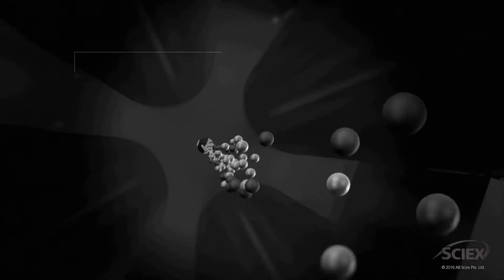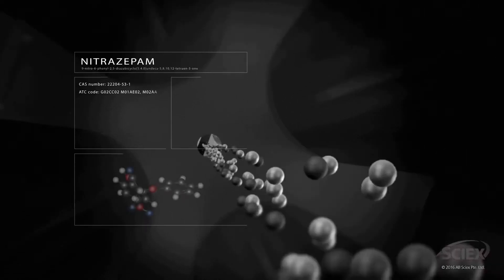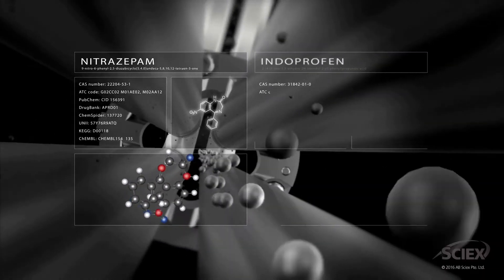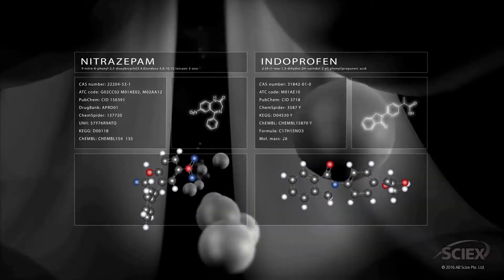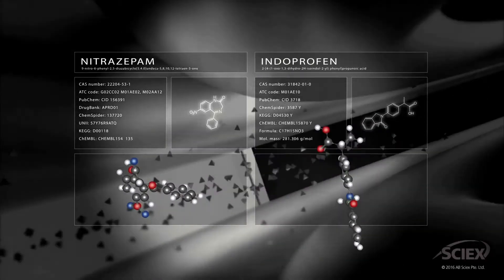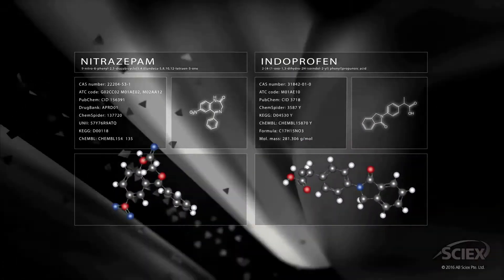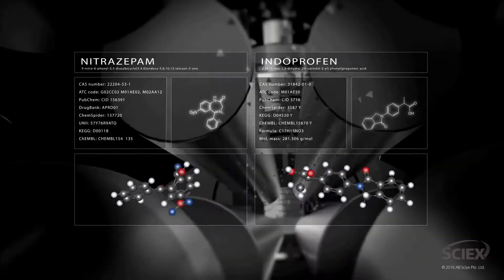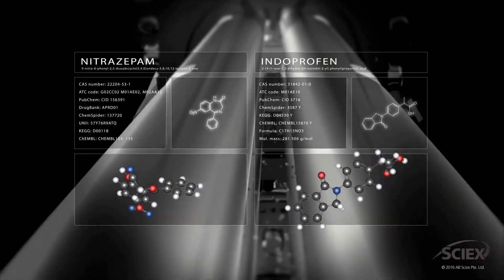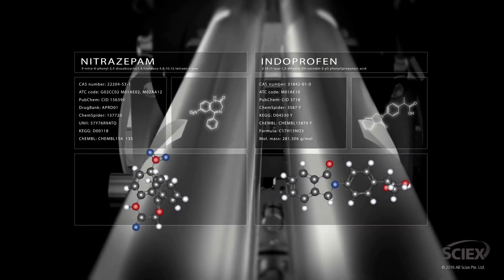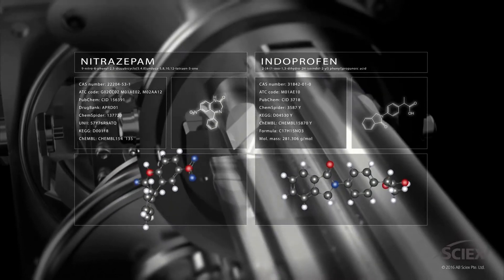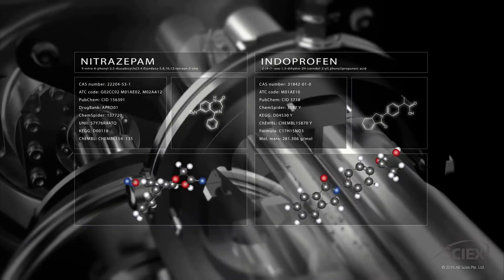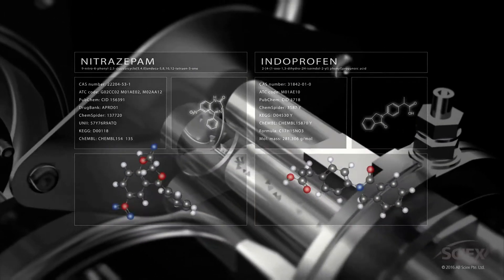Consider a sample that contains two isobaric compounds, nitrazepam and indoprofen, which possess identical molecular weights and retention times. Since these compounds have the same parent and daughter ions but have different molecular structures, standard triple-quad MRM selectivity cannot separate them.